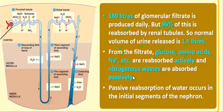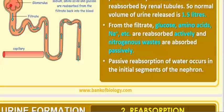Nitrogenous wastes are reabsorbed passively. Active transport moves substances from low to high concentration, while passive transport moves them from high to low concentration. Useful substances like glucose, amino acids, and sodium use active transport, while nitrogenous wastes use passive transport. Passive reabsorption of water also occurs in the initial segments of the nephron.